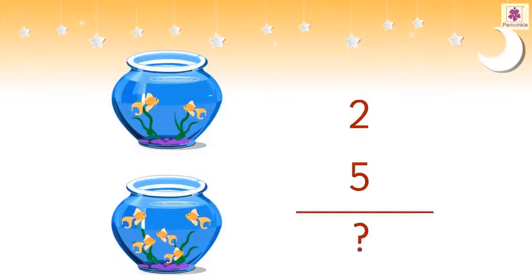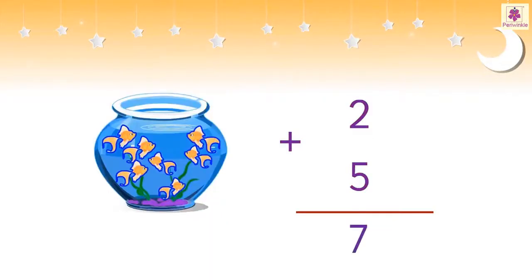How many fish are there all together? Let's count them. We are actually adding number two to number five. That is two plus five which is equal to seven.